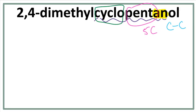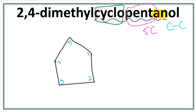The 'cyclo' tells us that these carbons are arranged in a ring — it is a cyclic compound. When we draw 5 carbons in a ring, we end up with a pentagon. So let's draw our pentagon and number our carbons. We have an 'ol' here, meaning we have an OH attached — this is the alcohol group. This OH is attached on the first carbon. Since we don't see a number in the name, we assume it is attached to the first carbon.